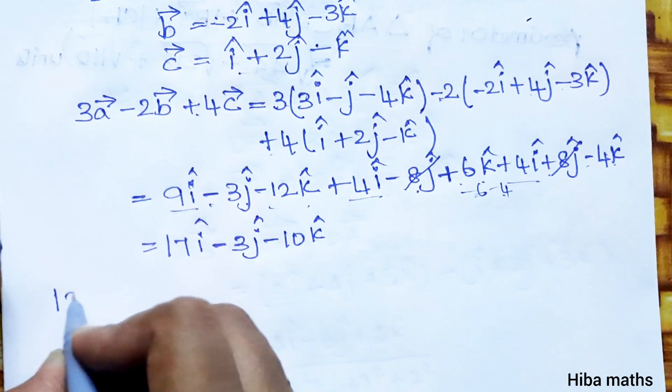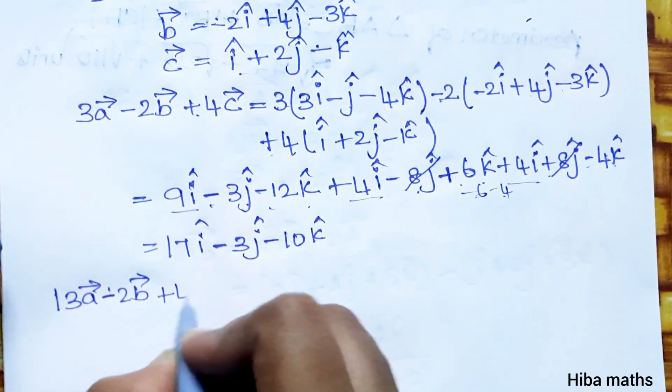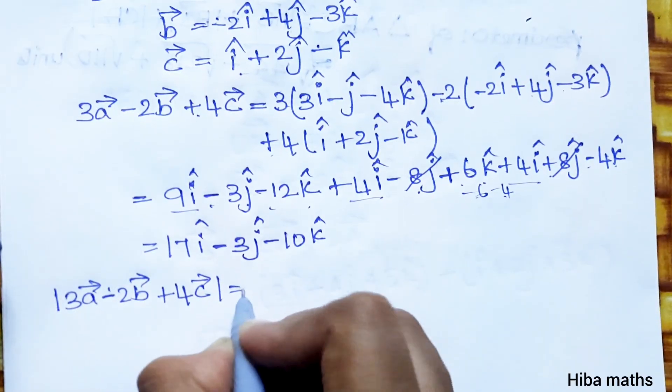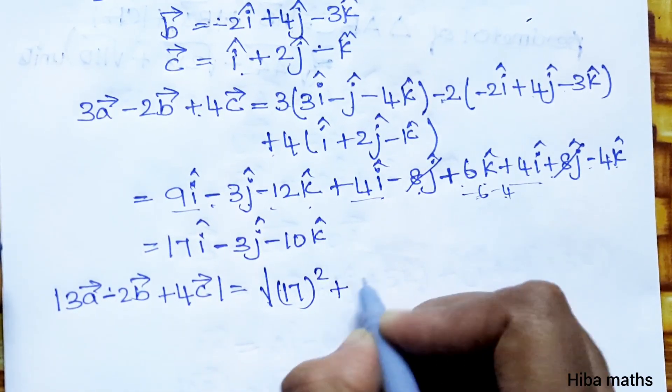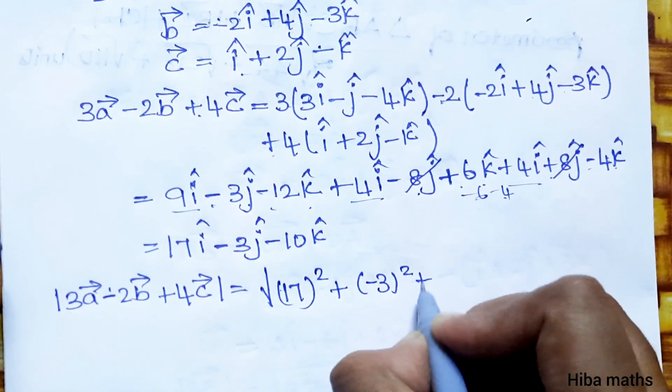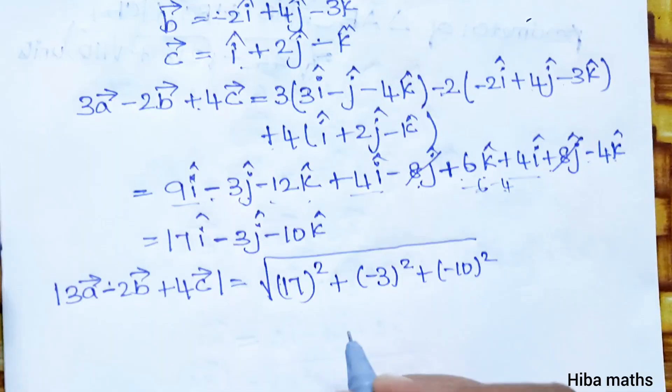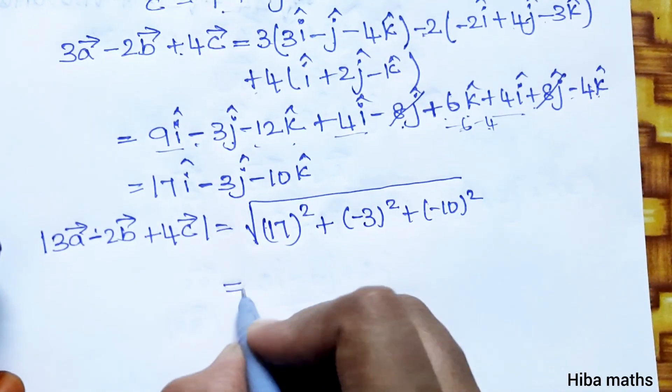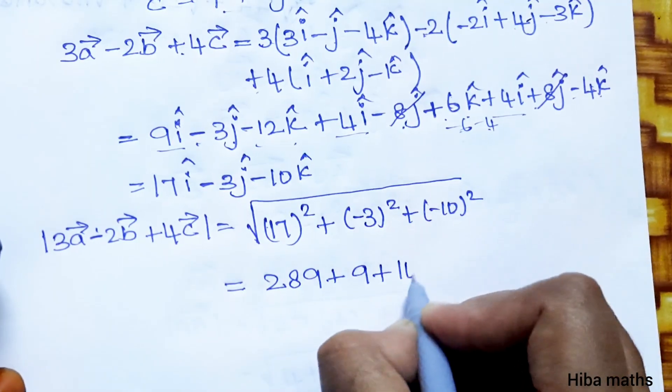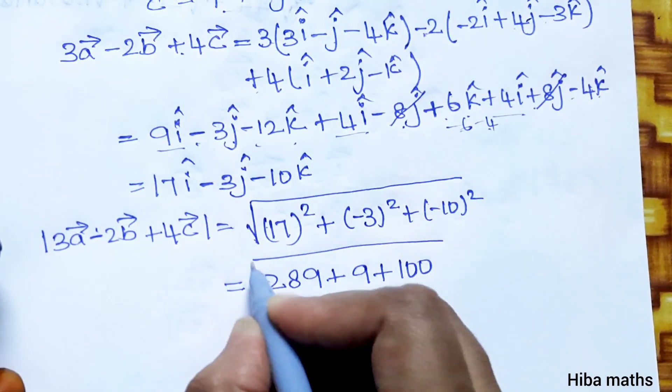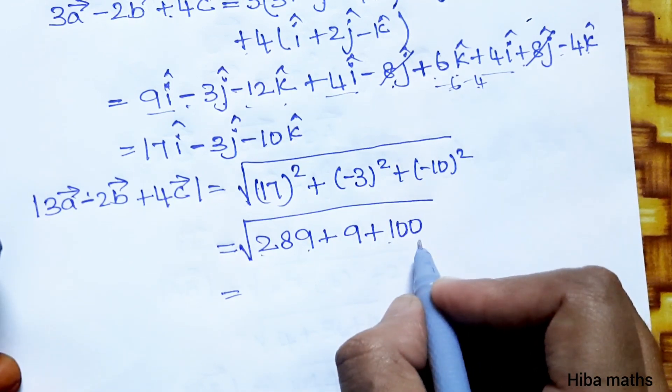The modulus of 3A vector minus 2B vector plus 4C vector equals the square root of 17 squared plus minus 3 squared plus minus 10 squared. This equals the square root of 289 plus 9 plus 100.